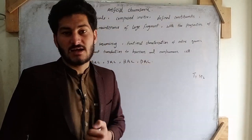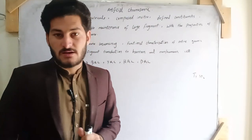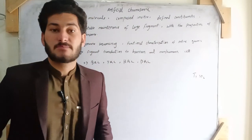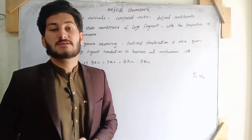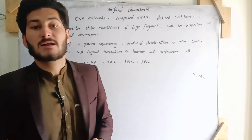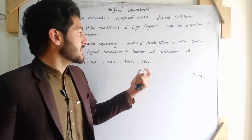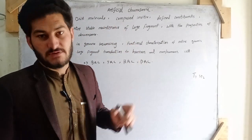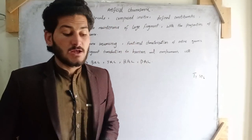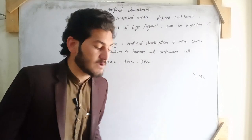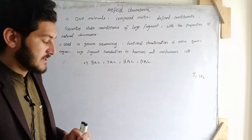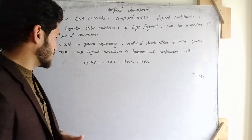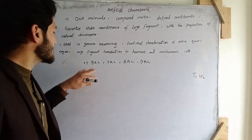The third function of artificial chromosomes is large fragment transduction to human and non-human cells. We can transfer any type of desired gene or parent DNA to human and non-human cells using artificial chromosomes.